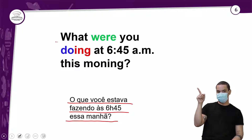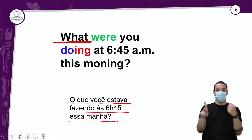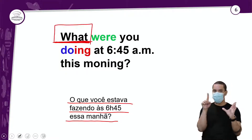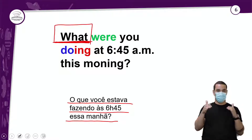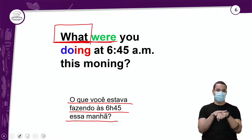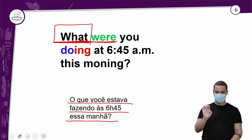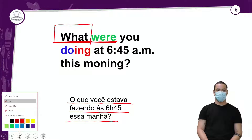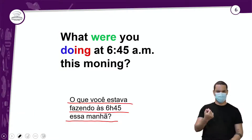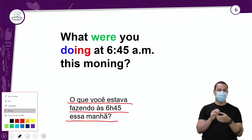Primeiro, o quê? 'What' — esse é o meu pronome interrogativo. Ele vem na frente para fazer perguntas. Logo depois, você vai ver 'were'. Você não vai falar 'where', porque 'where' é 'onde'. Você vai falar 'were'. Então: 'what were' — o que você estava. Esse 'were' é o meu 'estava', é o verbo to be.